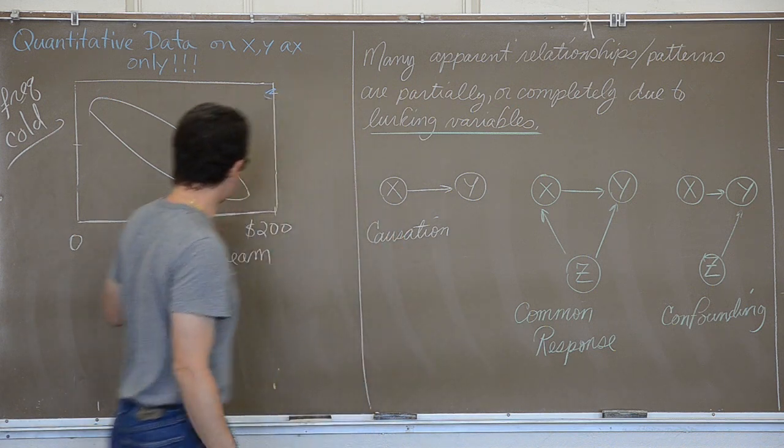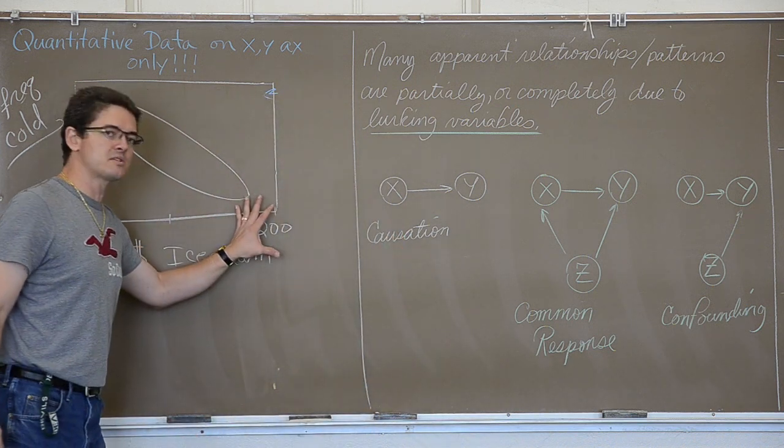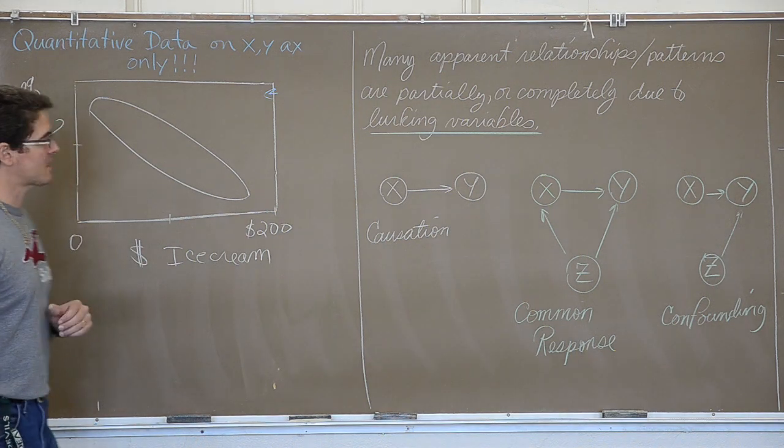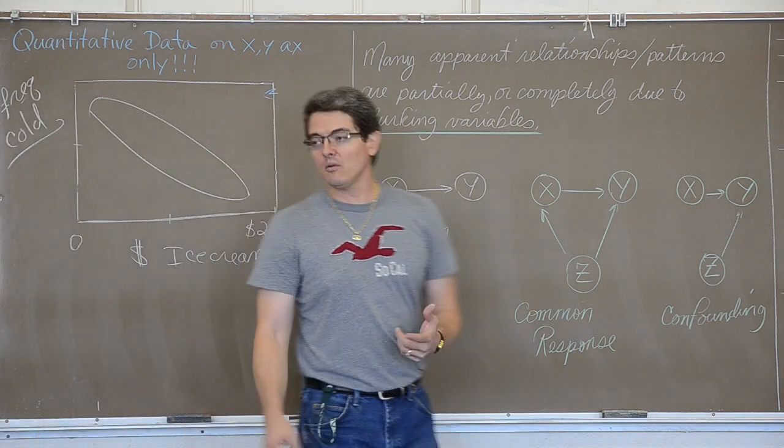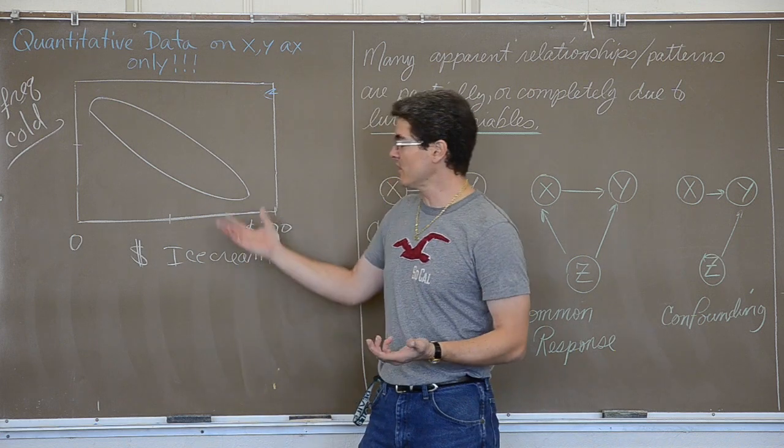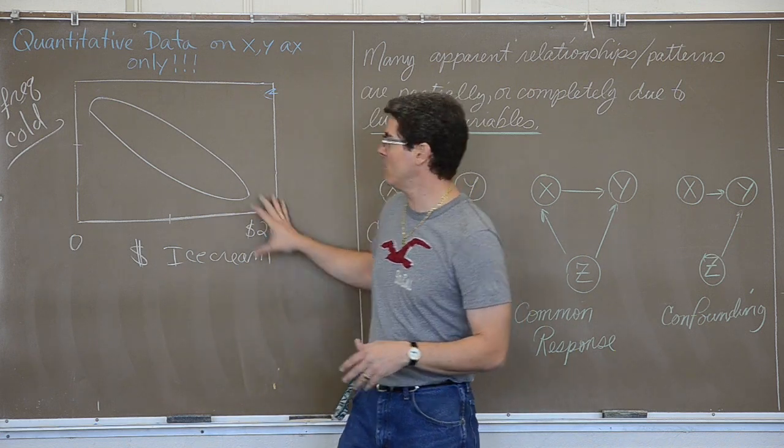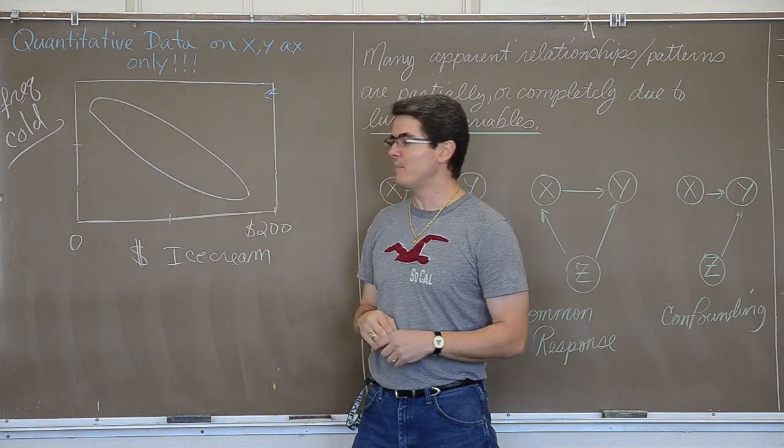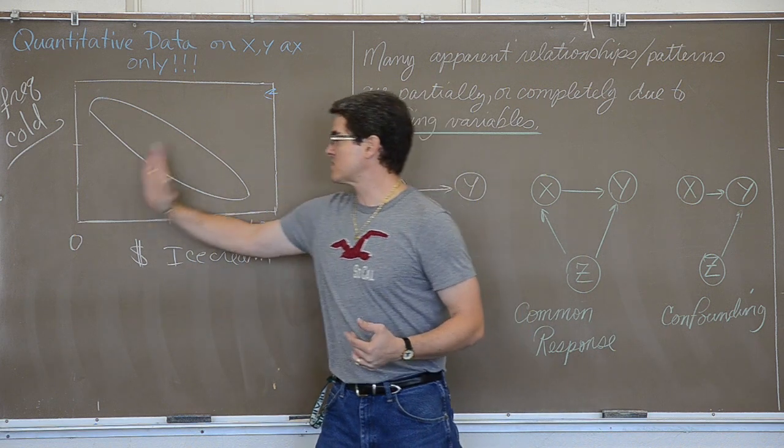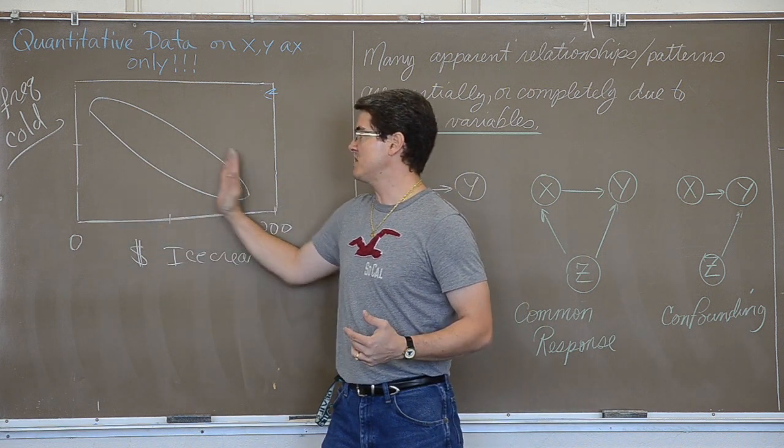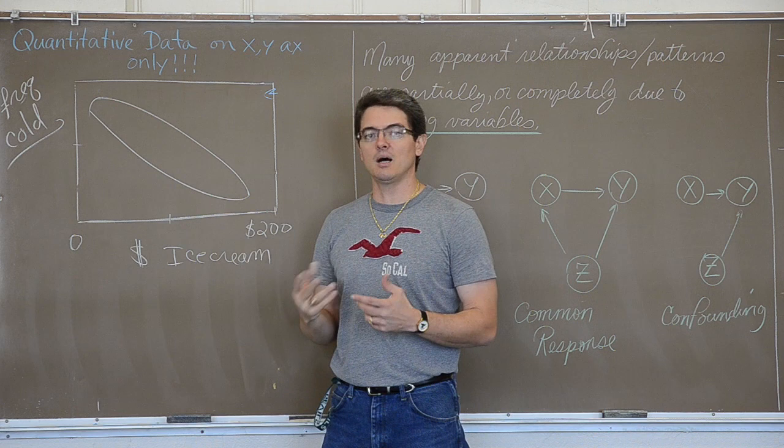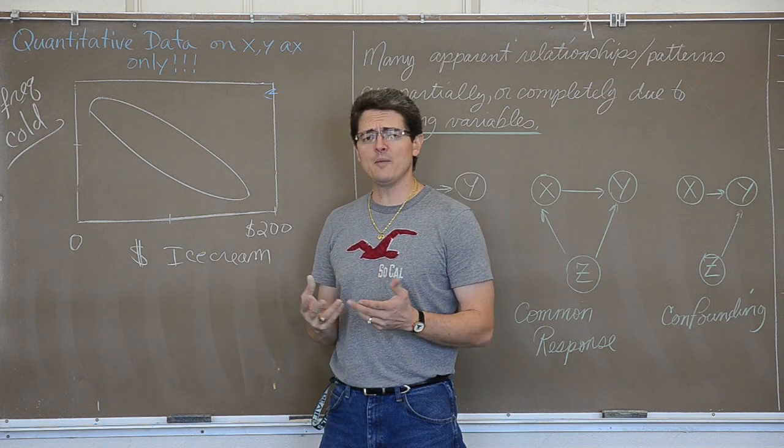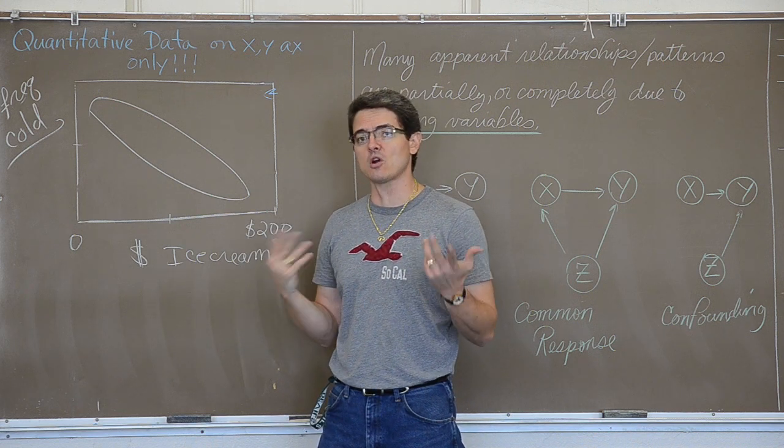So, in this example, there could very well be a common response lurking variable of just the temperature. And the temperature could be driving up the heat, could be driving up ice cream sales, and at the same time, you know, not that many people are getting sick. Well, great! I just gave you a reasonable example of a lurking variable that would follow this kind of relationship, but you know what I can still do? I can still use the ice cream sales to predict how much or how many people are going to a clinic or the hospital for a cold.